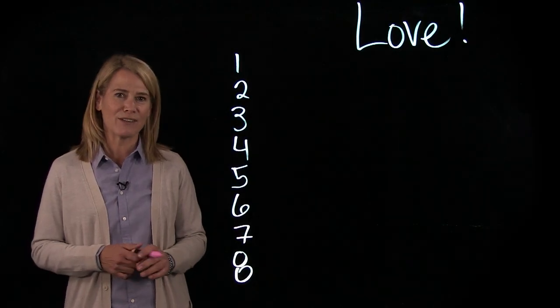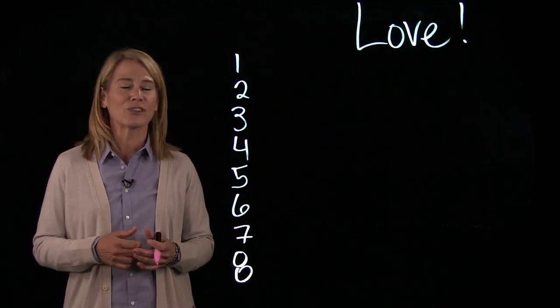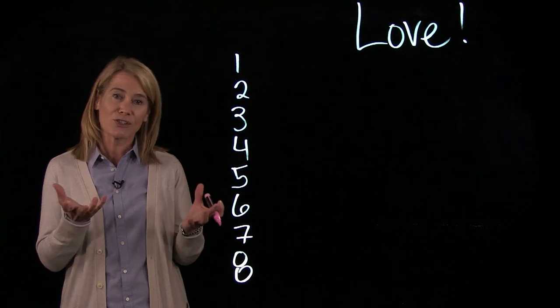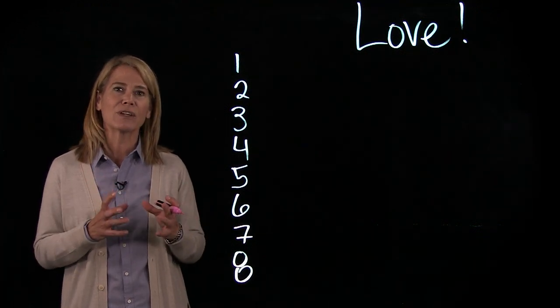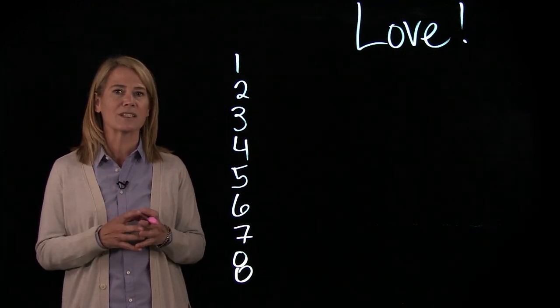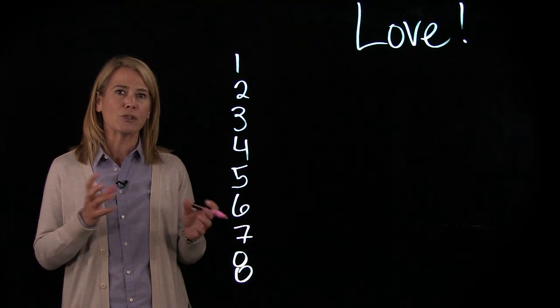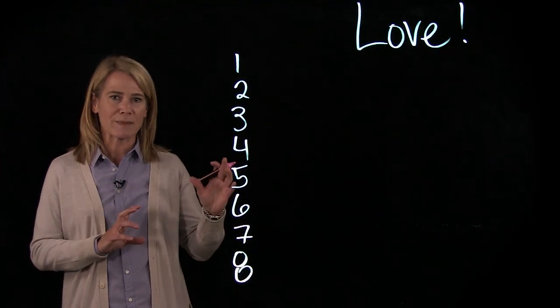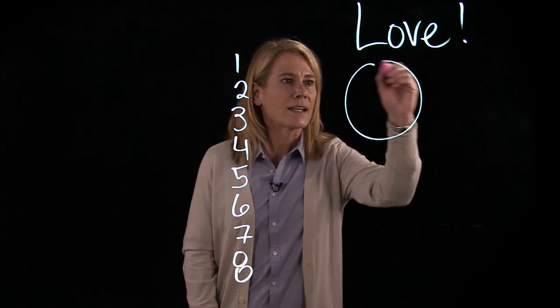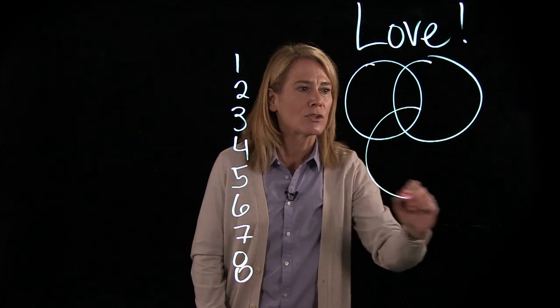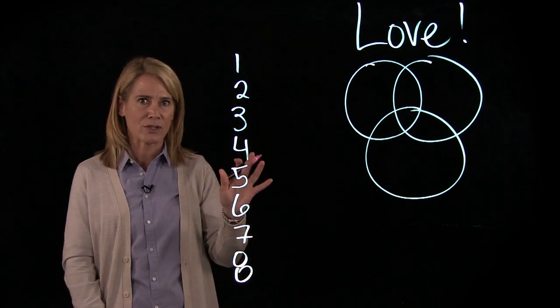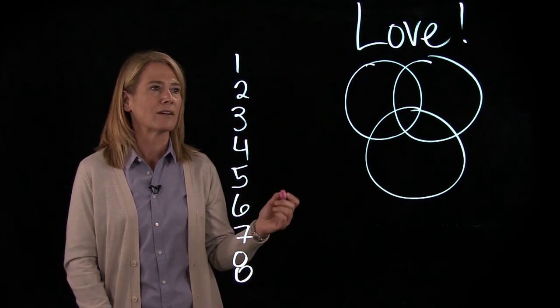So let's talk about a theory of love. Sternberg has a triangular theory of love, which I like to draw in circles, but his triangular theory of love suggests that there are three components to love: your commitment, your passion, and your intimacy. I draw it as interlocking circles because it's easier to see the intersection of those places than it is in a triangle, but it is the triangular theory of love.